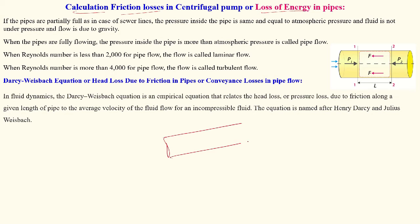Consider a cross-section pipe where water is flowing only partially — water flows only up to a certain level and is exposed to the open air. In this condition, the pressure is equal to atmospheric pressure. This is called open channel flow, where water flows only due to the effect of gravity, not any external force.